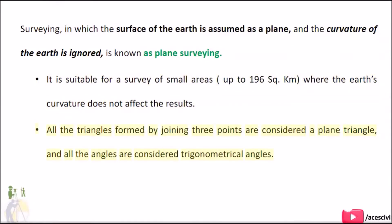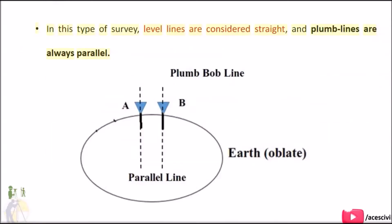All the triangles formed by joining three points are considered plane triangles, and all the angles are considered trigonometrical angles. In this type of survey, level lines are considered straight and plumb lines are always parallel.